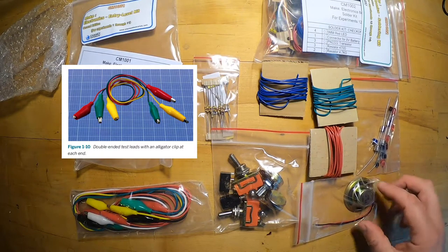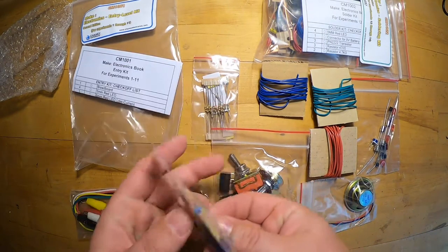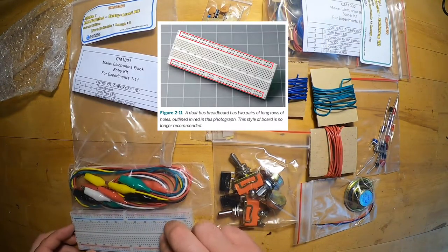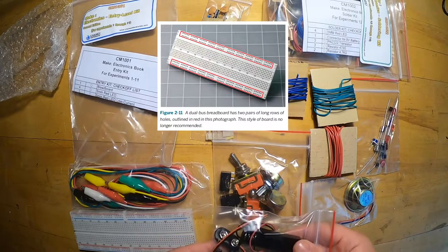For connecting things temporarily as opposed to breadboards, there are so-called double-ended alligator test leads. There's a couple boxes of passive components, and then here is the solderless breadboard.